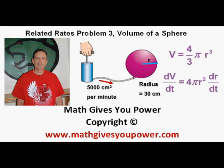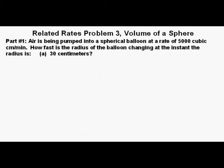Related Rates Problem 3, Volume of a Sphere. Part 1: Air is being pumped into a spherical balloon at a rate of 5,000 cubic centimeters per minute. How fast is the radius of the balloon changing at the instant the radius is 30 centimeters?